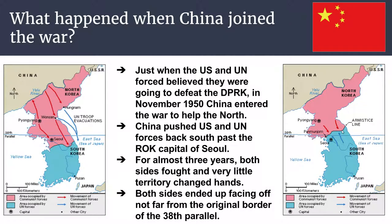After all the fighting, both sides ended up not very far from the original 38th parallel border. The South Korean forces and the US managed to retake Seoul and push back to roughly the original line. A little bit of South Korea ended up in North Korean hands, and a slightly larger chunk of North Korea ended up in South Korean hands. But other than that, the entire war was fought for very little territorial change — a lot of people died, a lot of money spent, a lot of bombs dropped, for not a lot of change.